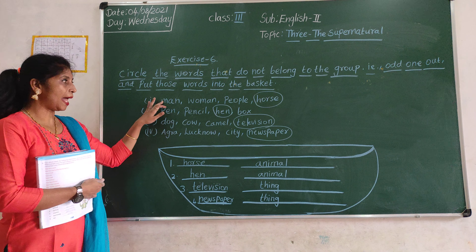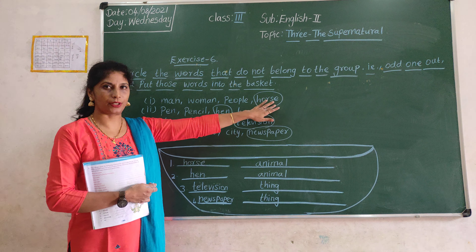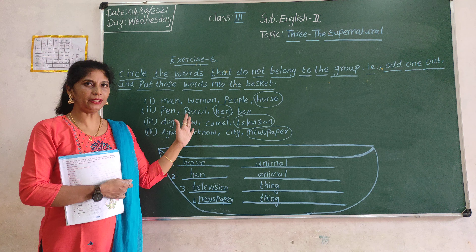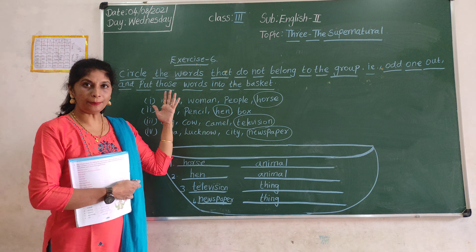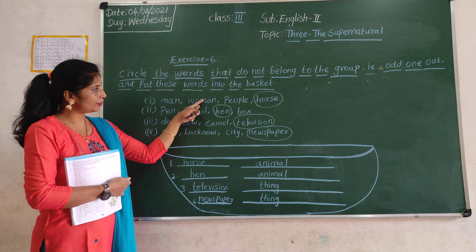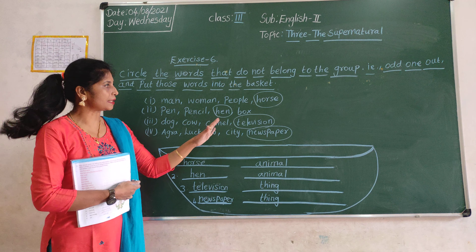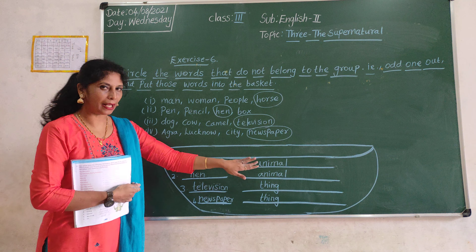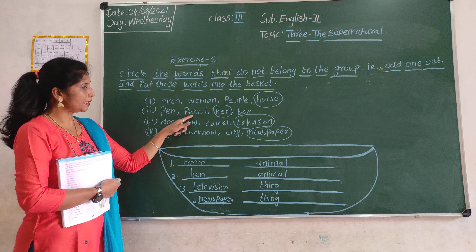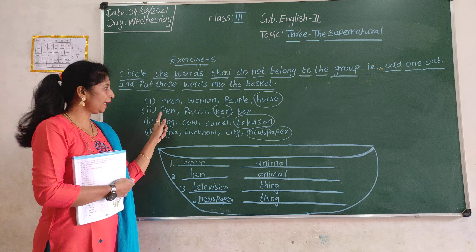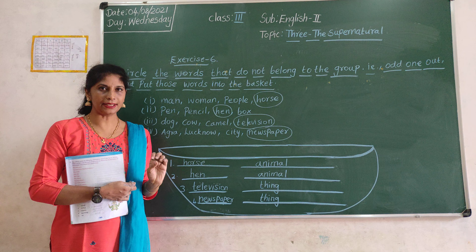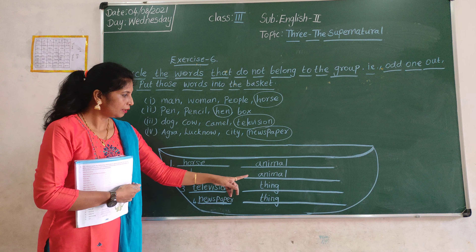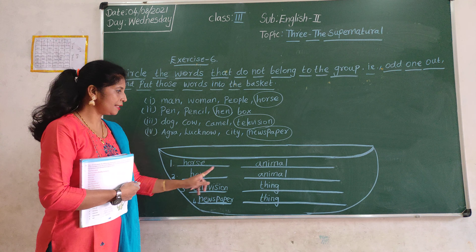Understood, children? Man, woman, people are names of persons — naming words, name of a person. Horse is the name of an animal, so horse is animal. Pen, pencil, box are things. Hen is an animal — hen is the name of an animal. So hen is animal.